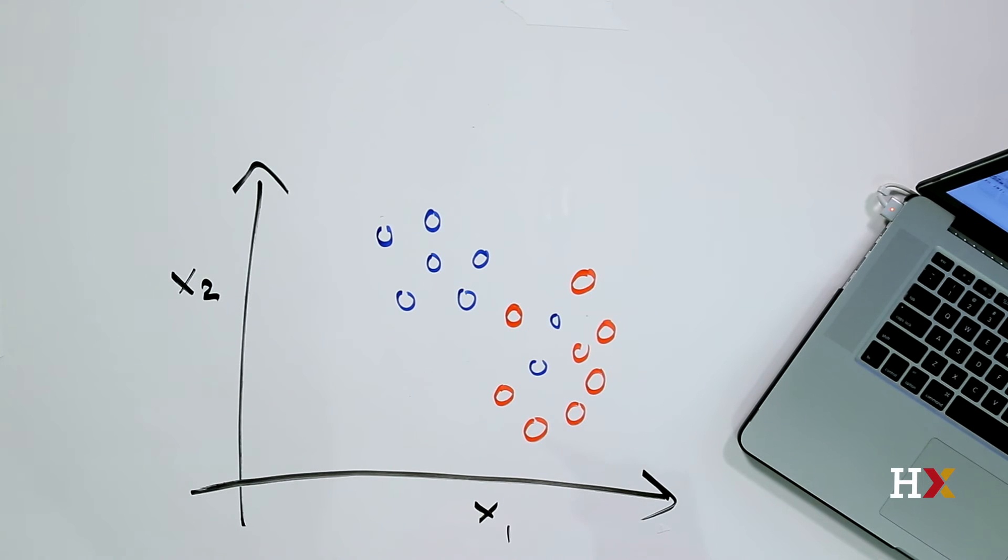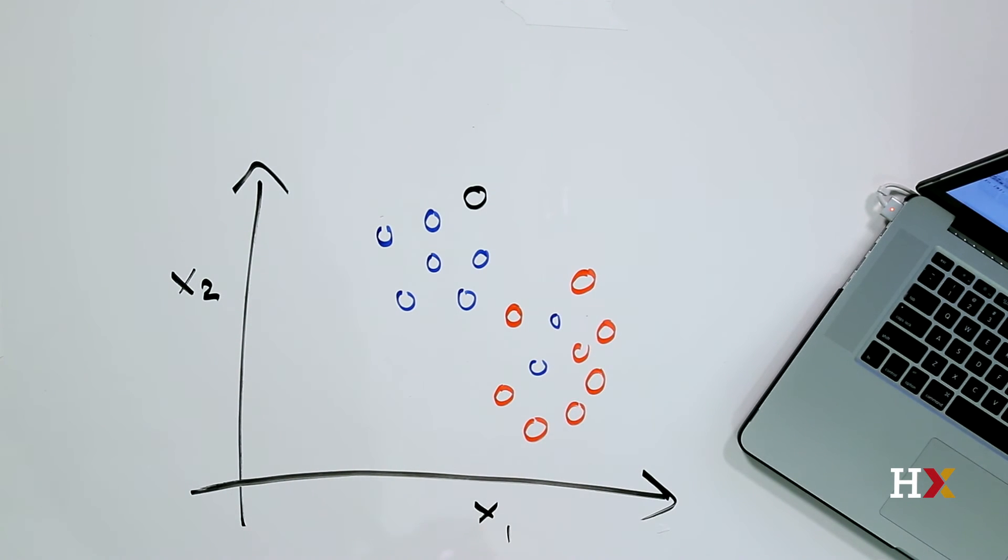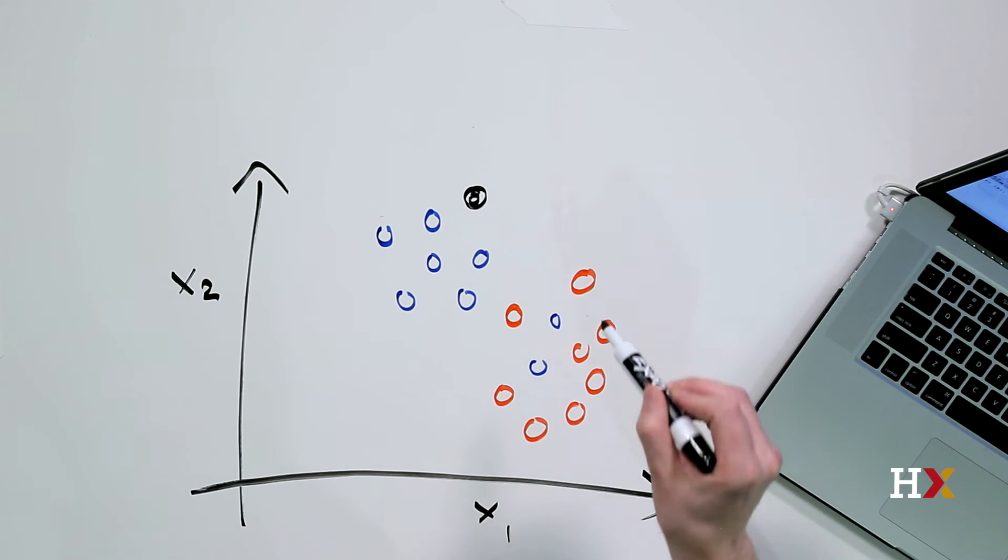The goal behind classification is the following. Imagine we get a new data point, say the black point over here, whose class is not known. Should we assign this point to the blue category or the red category?